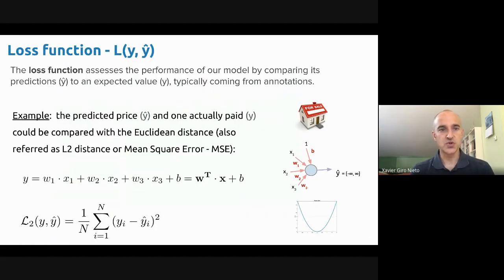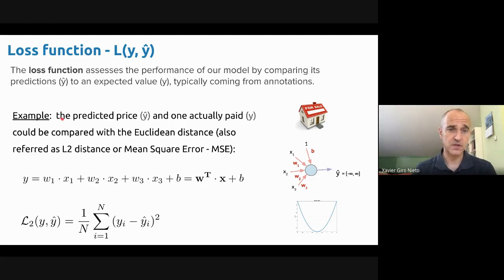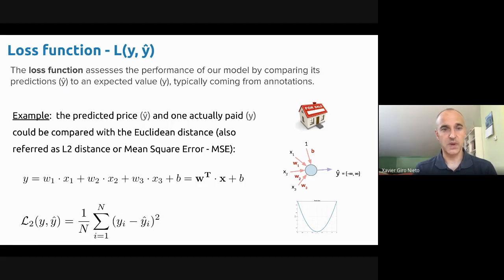Before presenting backpropagation, I need to introduce the concept of the loss function, which you will see in more detail in the future. The loss function assesses the performance of our model by comparing its predictions — that's going to be y-hat — to an expected value y, which is typically coming from annotations, the ground truth. For example, imagine a brick-click price y-hat from our model compared to the one actually paid, y. These two values can be compared with the Euclidean distance, also known as the L2 distance, the mean square error, or MSE.